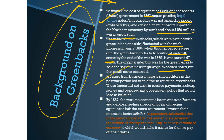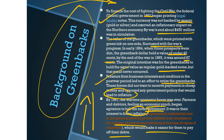Pressure from business interests and creditors in the post-war period led to an effort to retire the greenbacks. These forces did not want to receive payments in cheap money — which is what they considered the greenbacks — and opposed any government policy that would lead to inflation. By 1867, the economic boom from the war was over. Farmers and debtors were feeling the economic pinch and began to halt the notes' retirement, as it was in their interest to foster inflation — a persistent, substantial rise in the general level of prices related to an increase in the volume of money in circulation — which would make it easier for them to pay their debts. The more paper money in circulation, the lower the value of the dollar, but at least money would be more available for farmers to pay off their debts.